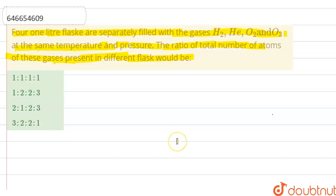So we can say that according to their molecules, we will decide the ratio. H₂, helium, O₂, ozone. So their molecules: two, one, two, and three.